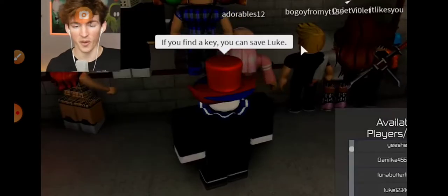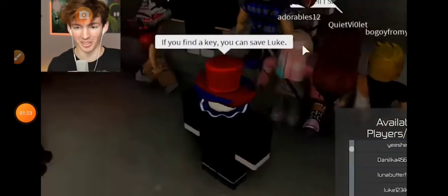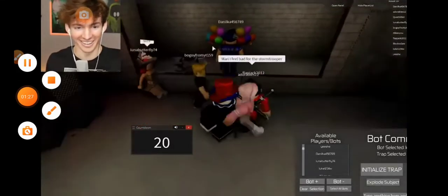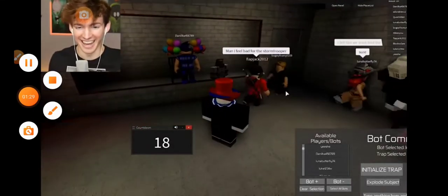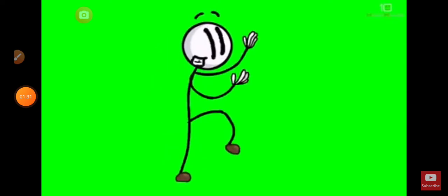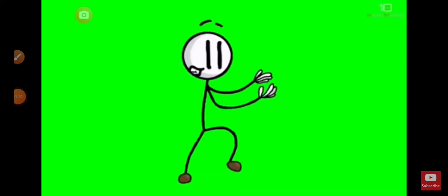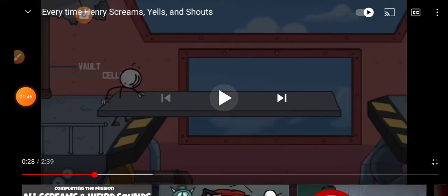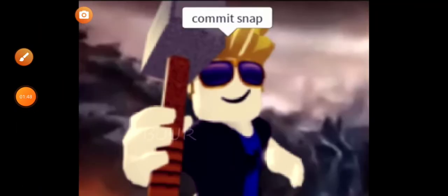Find a key to unlock the cage around the player's head. If you find a key, you can save Luke. You have 30 seconds. Alright! Alright! Look at her freaking out! Look at her freaking out! Yes! Yes! Yes!